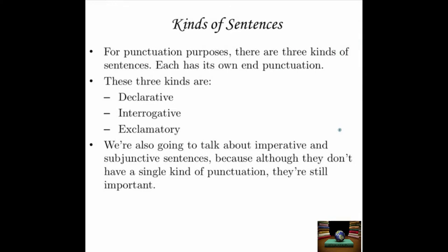We're going to look at a few kinds of sentences because some of them use certain types of punctuation exclusively. For punctuation purposes, there are three kinds of sentences, each with its own end punctuation. These three kinds are declarative, interrogative, and exclamatory. We'll also talk about imperative and subjunctive sentences, which don't have a single kind of punctuation but are still important.